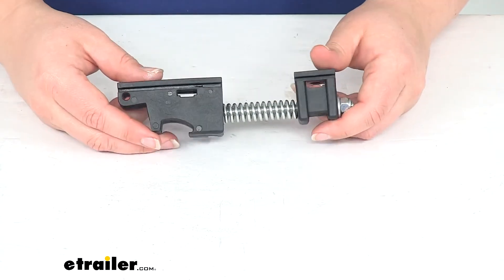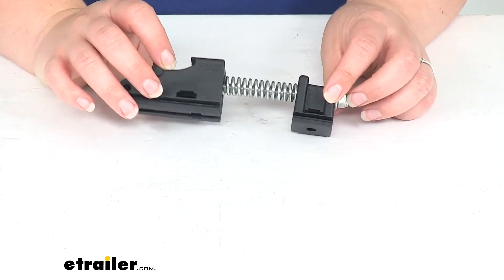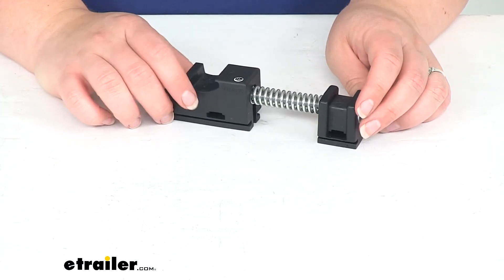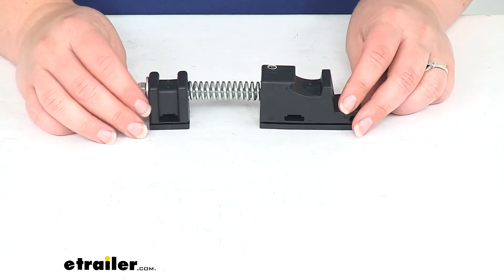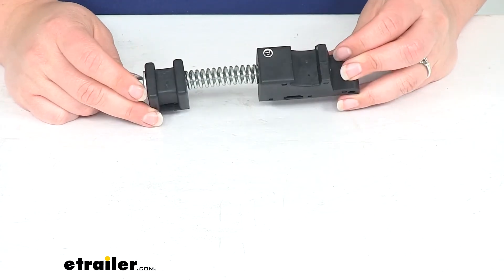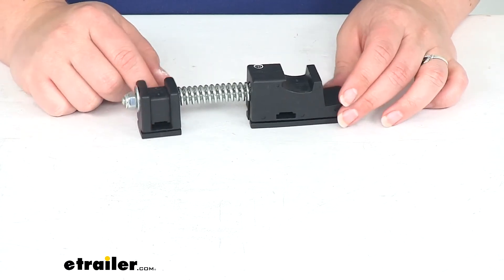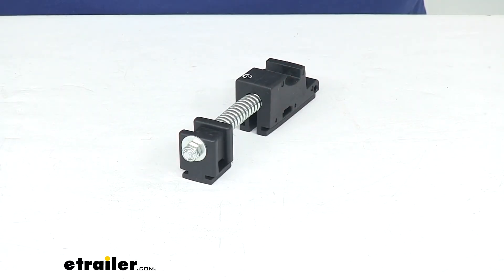This does come with just a single latch. If you need any other replacement parts for your X-Tang soft tonneau cover, you can always check eTrailer.com for any of those needs. This is made in the USA, and that's going to do it for our look at the replacement front latch assembly for X-Tang Revolution soft tonneau cover.